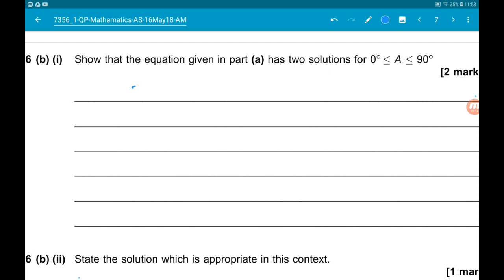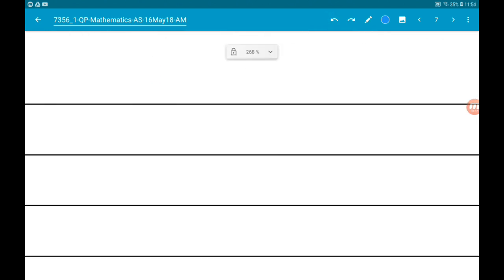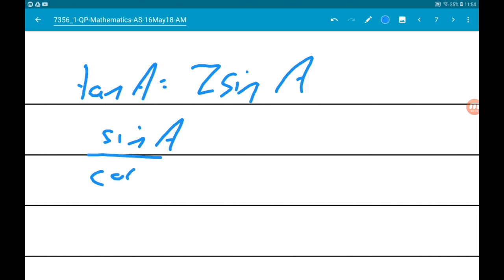Okay. So, tan of A is equal to 2 sine A. Tan of A is sine A over cosine A.